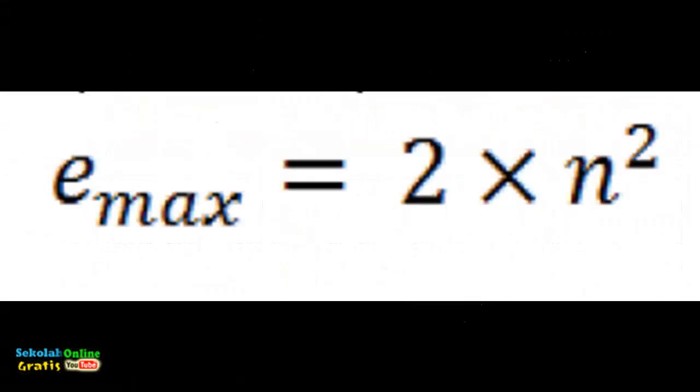The way to determine the maximum number of electrons in each atomic shell is to use the following formula, where Emax equals maximum electron, N equals shell layer.